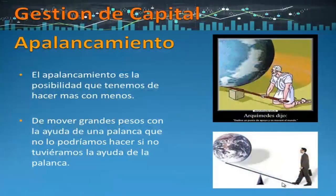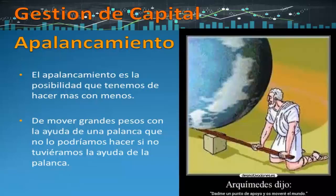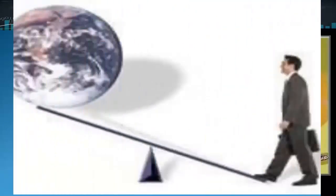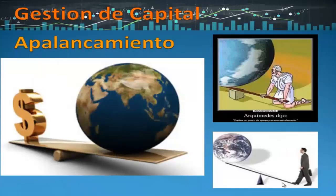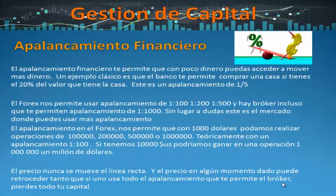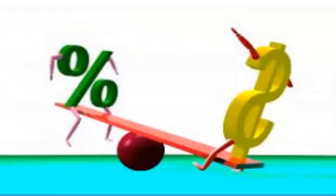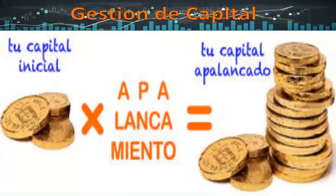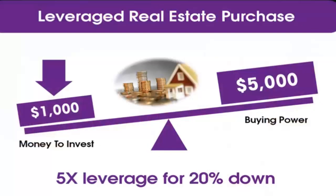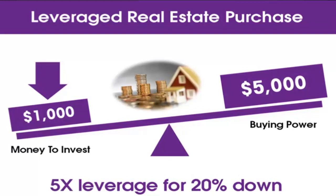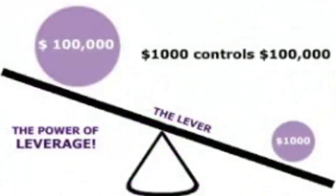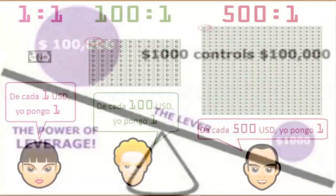Apalancamiento. Ya lo decía Arquímedes: dame un punto de apoyo y moveré el mundo. El apalancamiento consiste en la similitud cuando usamos una palanca — la posibilidad de mover grandes pesos con la ayuda de una palanca. El apalancamiento financiero te permite que con poco dinero puedas acceder a mover más dinero. Un ejemplo clásico es el banco que te permite comprar una casa si tienes el 20 por ciento del valor; este es un apalancamiento de 1 a 5. En el Forex nos permiten usar apalancamientos de 1 a 100, 1 a 200, 1 a 500, e incluso hay brokers que te permiten apalancamientos de 1 a 1.000.